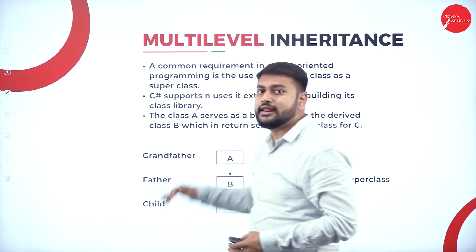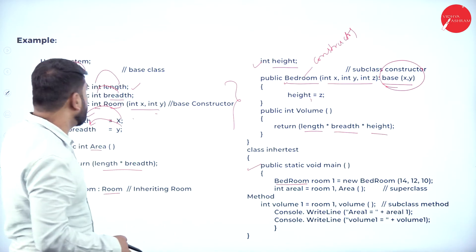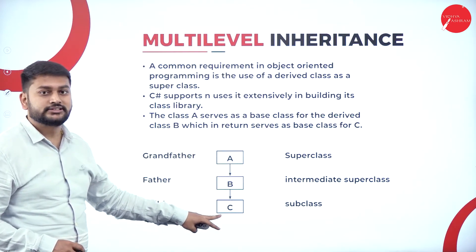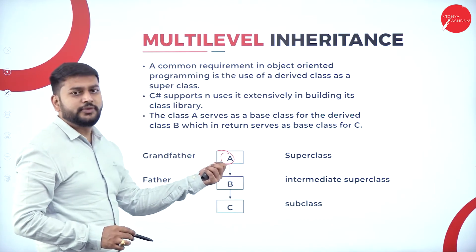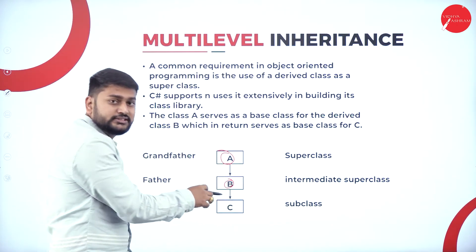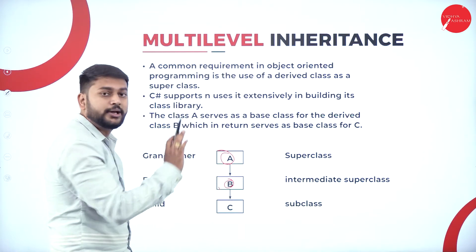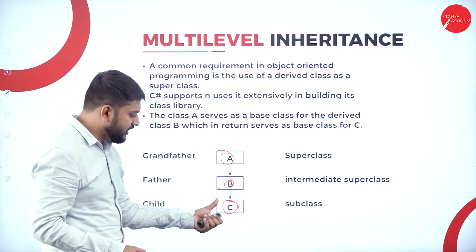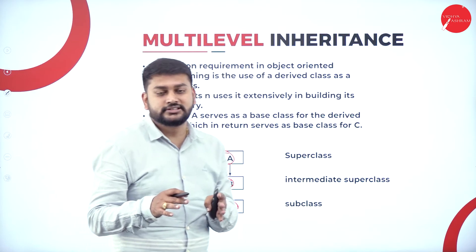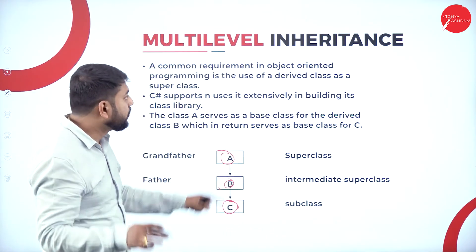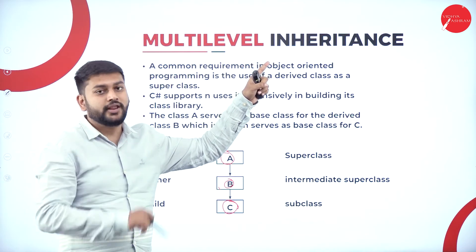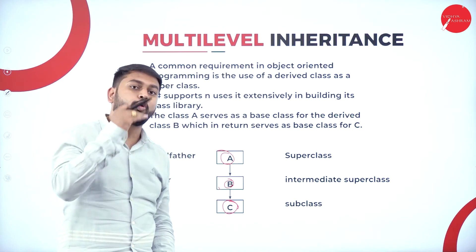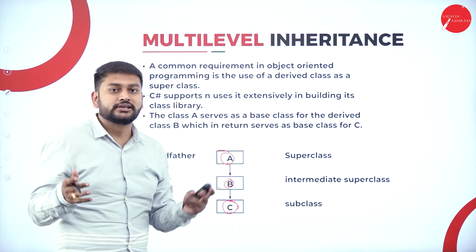Moving forward to multi-level inheritance. In the previous example I had one base class and one derived class, but here I have one base class and two derived classes. A is the base class, B is the derived class of A, and C is the derived class of B - so both B and A are base classes for C. When you have more than one level of inheritance, I call it multi-level inheritance. This is very important to understand.